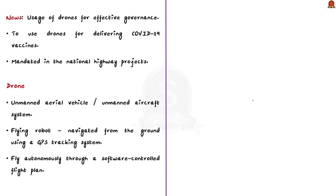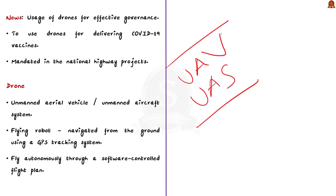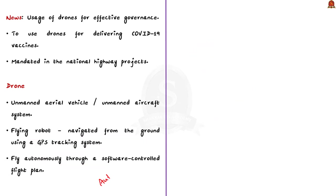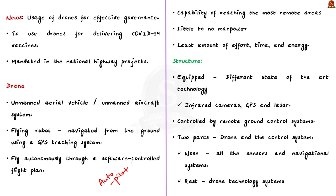A drone, also known as an unmanned aerial vehicle (UAV) or unmanned aircraft system, is a flying robot navigated from the ground using a GPS tracking system. These drones are operated remotely or controlled remotely; apart from that, they can also fly autonomously through a software-controlled flight plan — they can fly on autopilot. Drones have the capability of reaching the most remote areas with little or no manpower and least effort, time and energy. This is one of the greatest reasons why they are being adopted worldwide, especially in the military sector, commercial sectors, and in personal and future technology sectors.